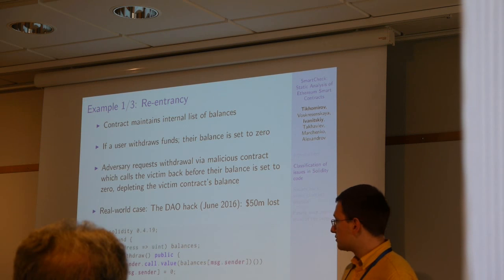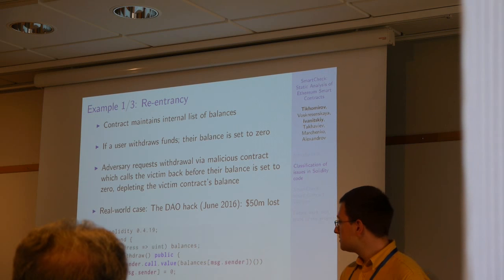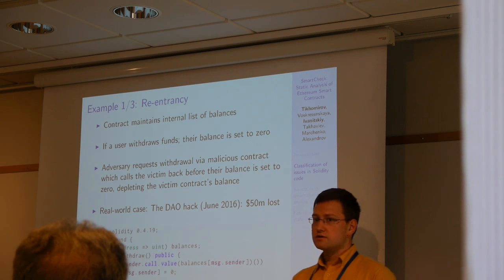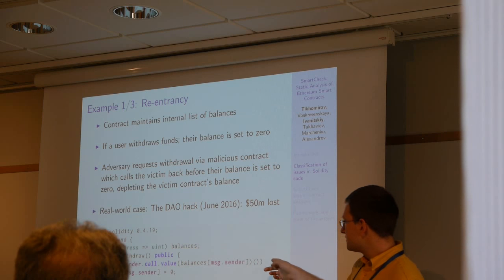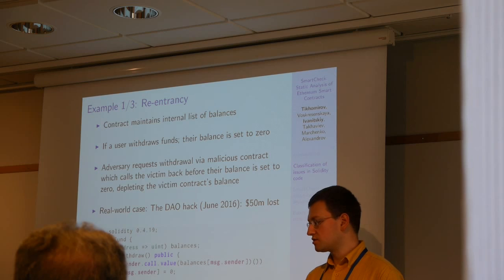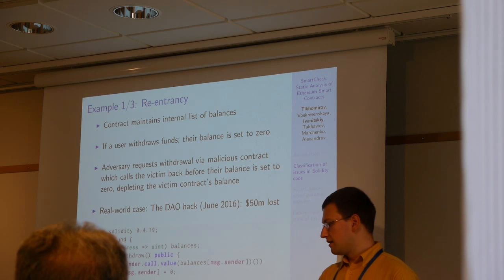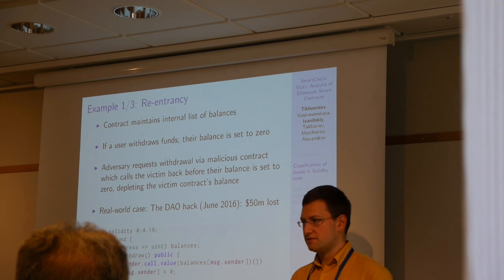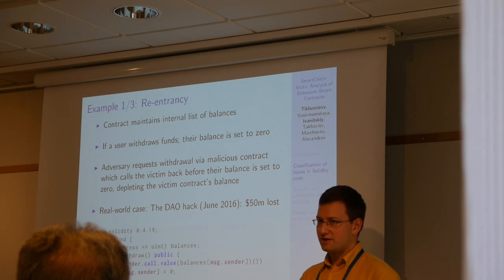Re-entrancy is probably the most famous type of bug in Ethereum. Imagine a smart contract that maintains an internal list of balances — some kind of investment fund where investors come and invest Ether, and the contract remembers who invested how much. A user has the right to withdraw their funds by issuing a special transaction. In this vulnerable code, money is sent back to the user first, and then the balance is updated to zero. An adversary can use a specially created malicious smart contract to request withdrawal, and this malicious contract can recursively call back the vulnerable contract. Because the balance has not yet been updated, Ether will be sent again and again to the attacker, depleting the balance of the contract at the expense of other users.